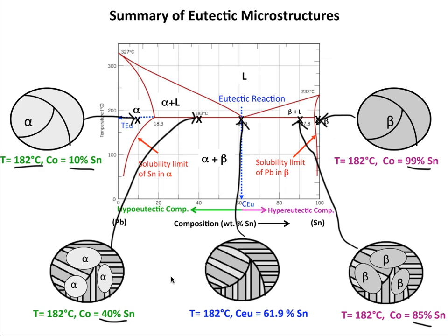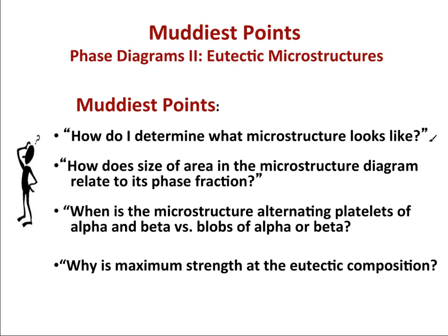One of the muddiest points was why the eutectic microstructure has the highest strength. The eutectic microstructure has the most barriers to dislocation motion — the platelets block dislocation motion, and motion can't travel far before hitting one of the platelets. The single-phase regions and the pro-eutectic chunk regions do not have those alternating platelets, so they are weaker because they do not block dislocation motion as well, giving the eutectic microstructure the highest strength.